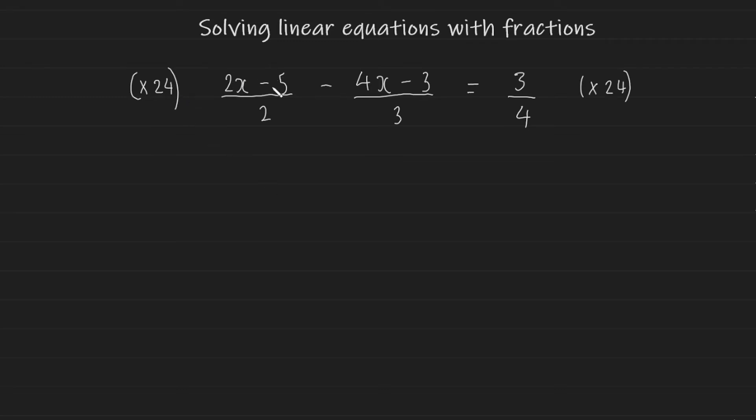Now let's multiply this 24 into each term. So 2x times 24 is going to be 48x. And 24 multiplied by 5 is going to be 120. And this is all over 2. And of course, the 24 multiplied by 4 gives us 96 with an x. And 24 multiplied by 3 gives us 72. And the 24 on the other side is going to multiply with 3 once again to give us 72 over 4.